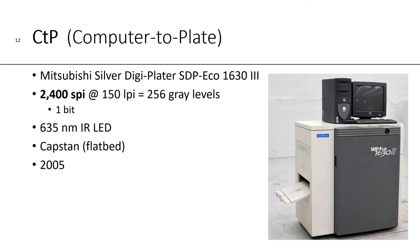We have a Mitsubishi Silver Digiplater DSP Echo 1633. It outputs at 2,400 spots per inch. If you output at 150 lines per inch, you get 256 gray levels, and that's a single-bit binary device. The infrared laser in there is 635 nanometers — red. The drum is a flatbed drum, which we call a capstan, and that photopolyester device was purchased in 2005.